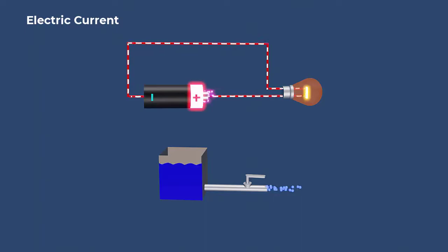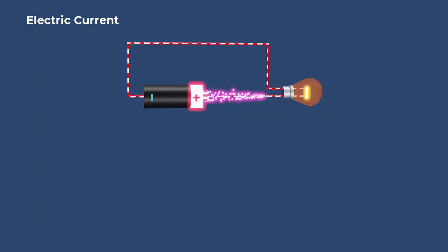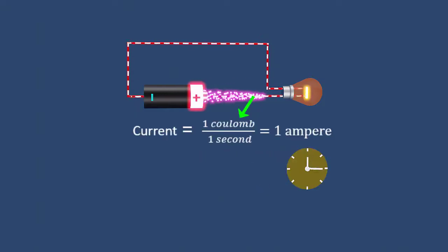Imagine electricity as a fluid that can flow through wires. A wire acts like a water pipe, enabling smooth flow of charges from source to the device. The flow of charges through a conductor is called electric current. It is measured in amperes. If one unit of charge passes through a conductor in one second, we call it one ampere.